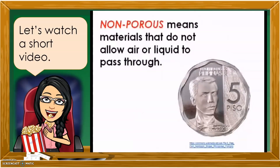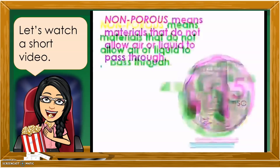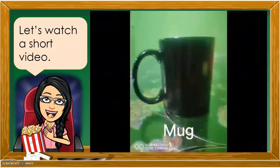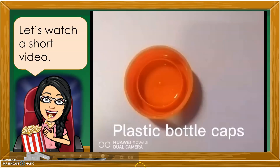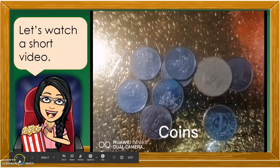Non-porous means materials that do not allow air or liquid to pass through — they do not absorb water. Examples are plastic bottles, cups, and coins.